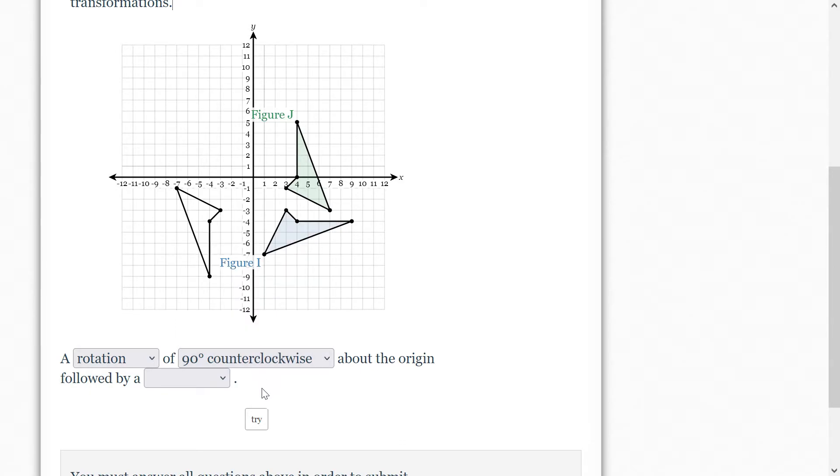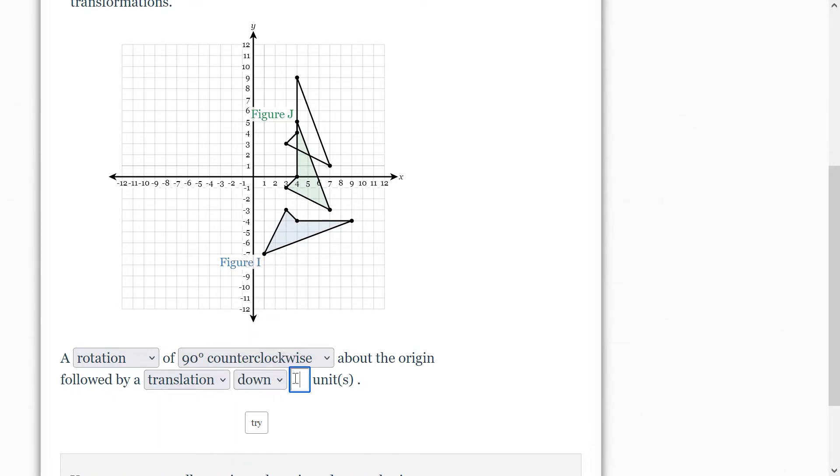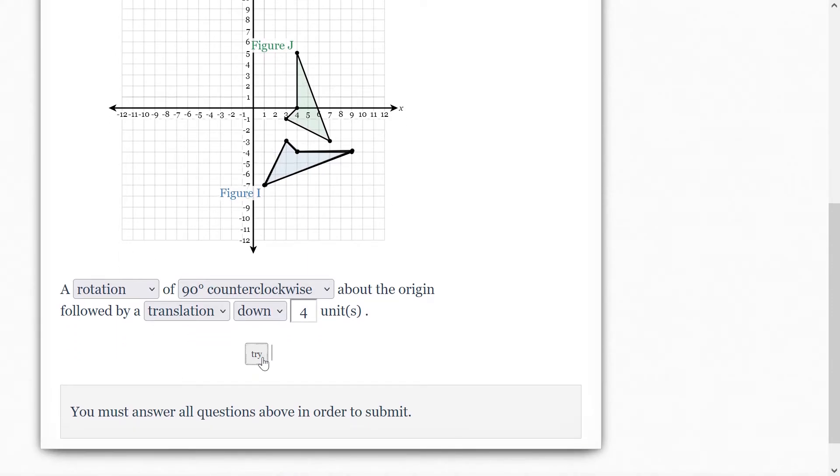So we'll go 90 degrees counterclockwise, we hit try. That looks pretty good. Now what are we trying to do? Well, it looks like we're going to translate this down four. And we're just going to fill in the blanks here. Translation down four units. So we'll hit try here and we'll see the two steps together.